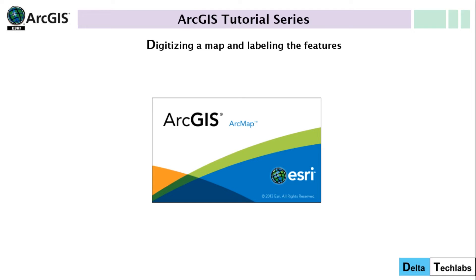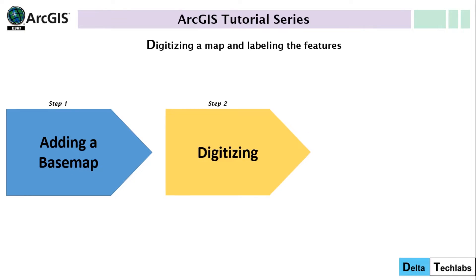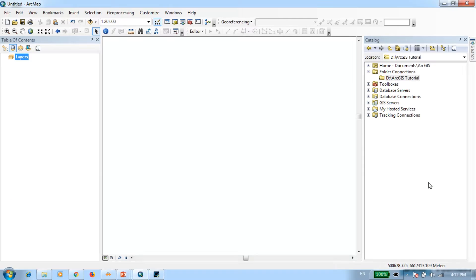Hello everyone, welcome to this tutorial on ArcGIS. Today I'll be showing you how to digitize various components of a map, be it a scanned map or another type of map. For this tutorial I'll be using an S3 base map. I've structured this tutorial into three parts: first, how to add a base map, then how to digitize, and finally how to add labels to those digitized components. Let's get started by opening ArcMap.